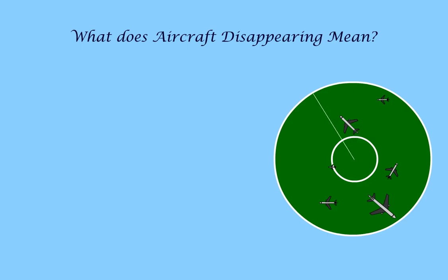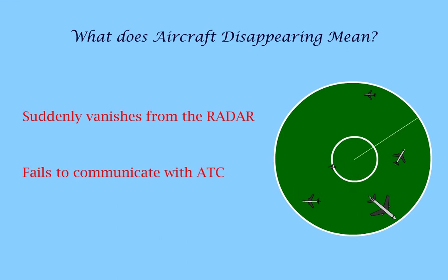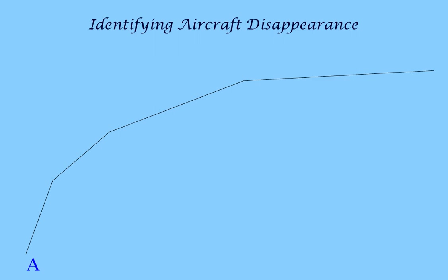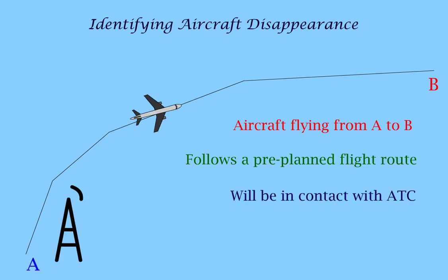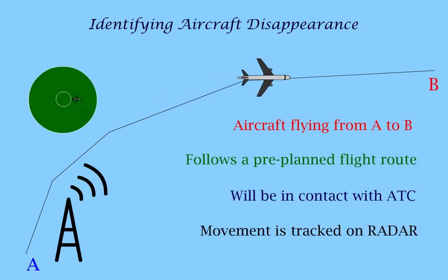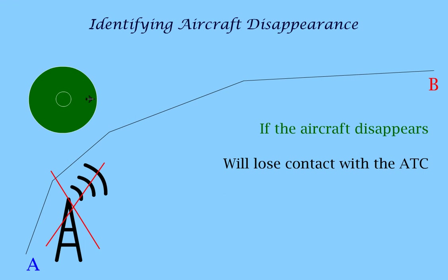First let's see what does an aircraft disappear mean. If it suddenly vanishes from the radar, or if it fails to communicate with the ATC. An aircraft flying from A to B will follow a pre-planned flight route. It will be in contact with the ATC and its movement is tracked on the radar. But if the aircraft disappears, it will lose contact with the ATC and its indication is lost on the radar.